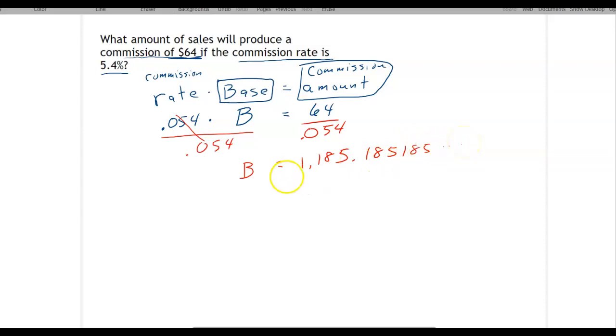But we know that in dollars and cents, I'm going to round off to the nearest cent. That 5 will bump that 8 up to a 9, so I'm going to say $1,185.19.